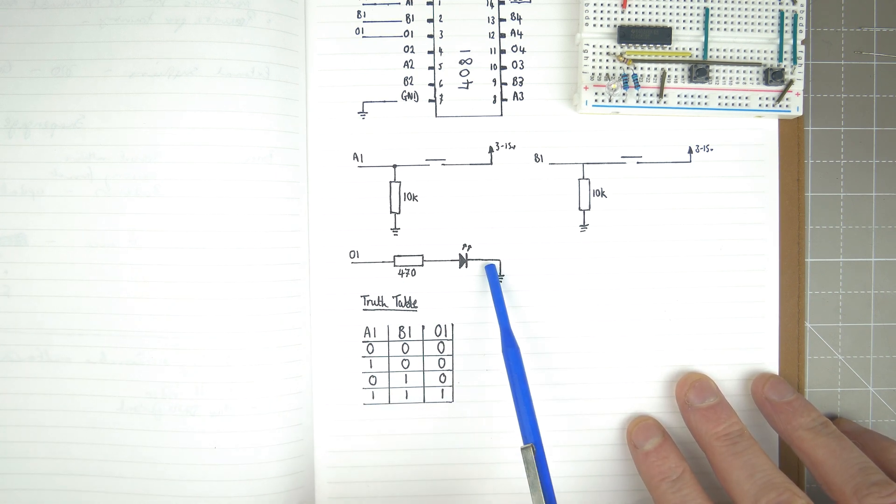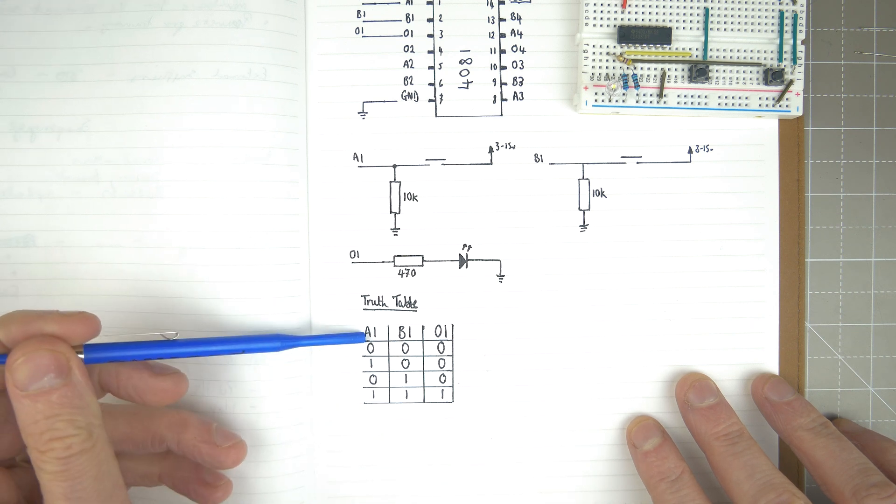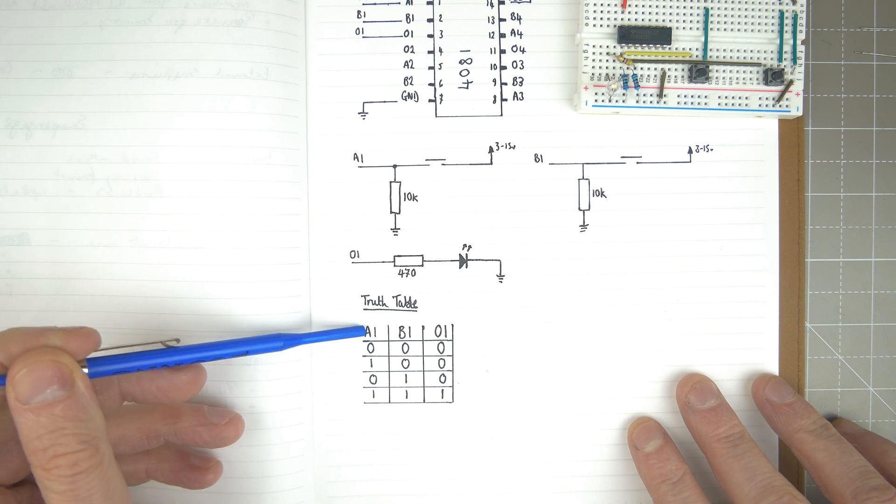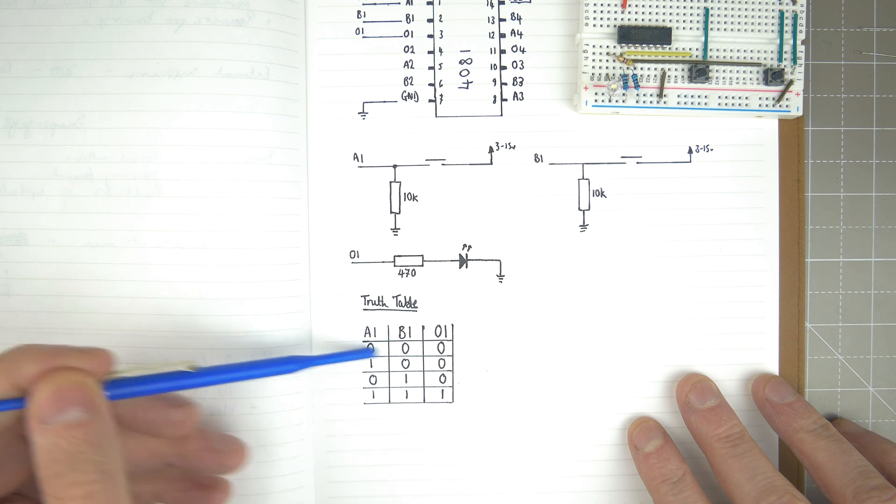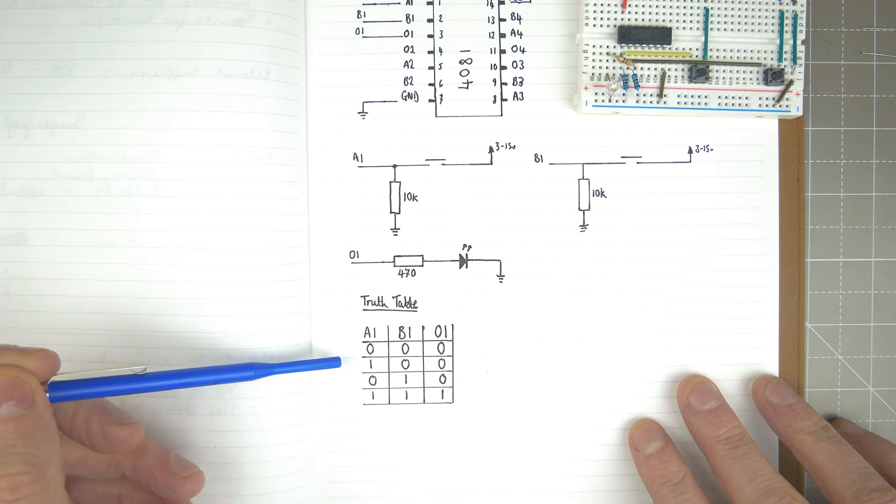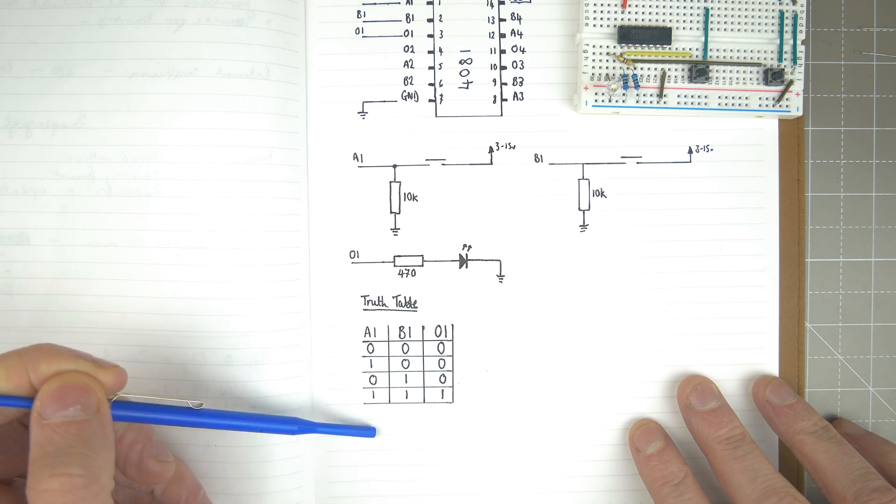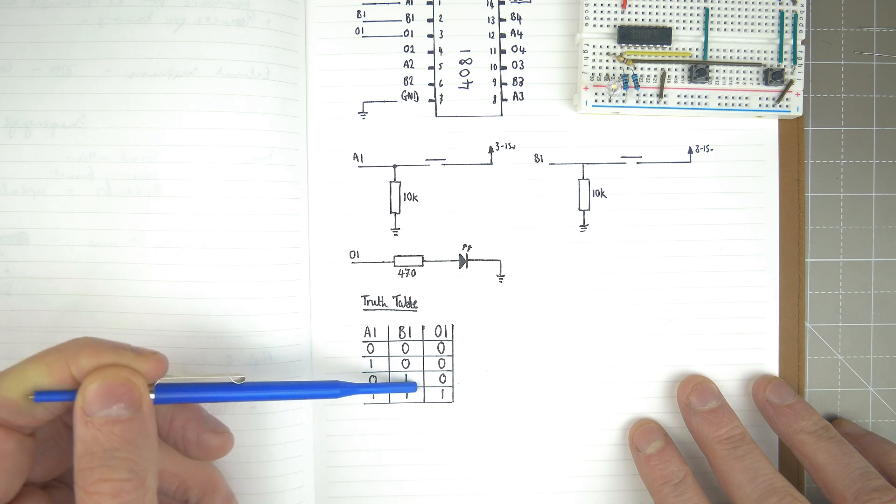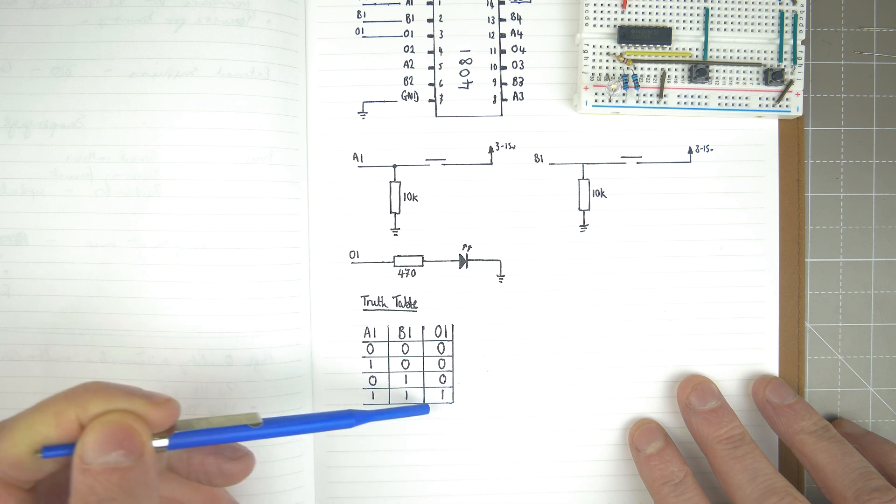That will light up when we have a result, and we can see that result from the truth table here. The truth table essentially tells us what the behavior is going to be. If input A and B are both zero, then nothing is on the output. If input A is one and B is zero, we get nothing. Same here—if A is zero and B is one, we get nothing. But if A and B are both one, then we get a one.